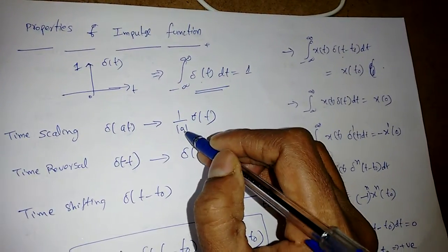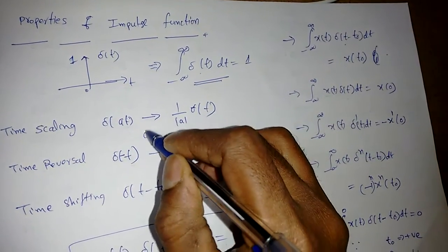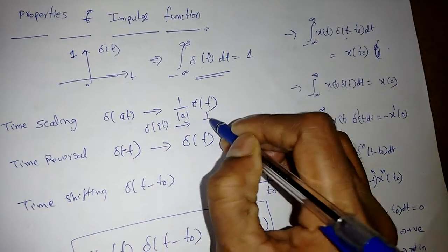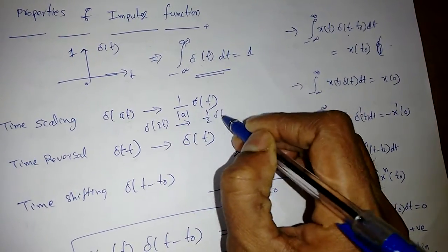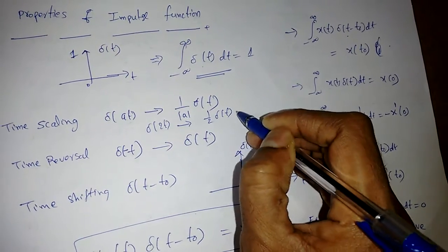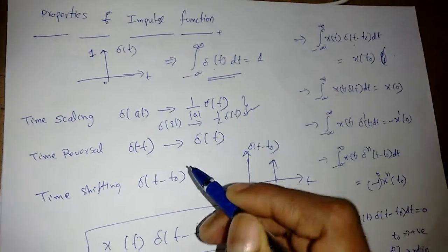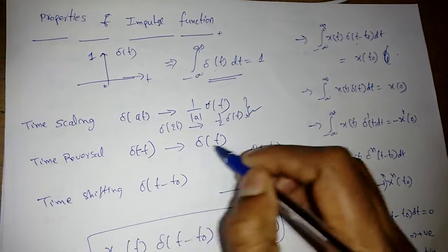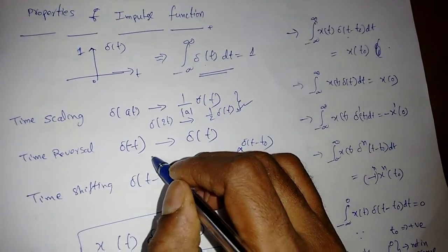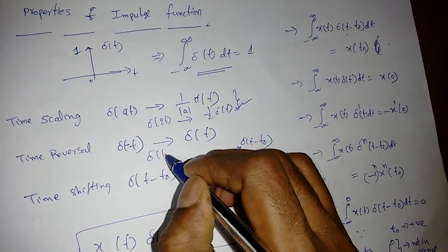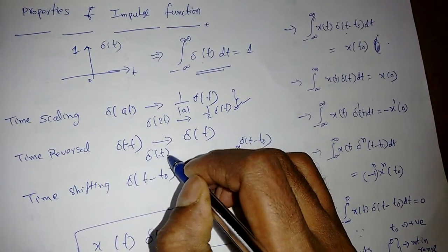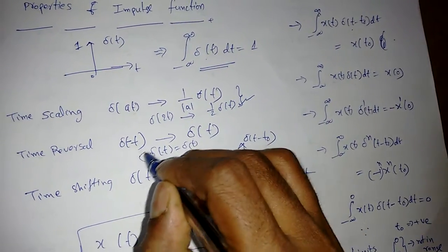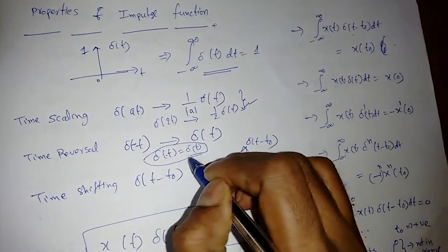For example, delta(2t) will become (1/2)·delta(t). That is one property of the delta function. If there is a time reversal, delta(-t) will become delta(t) only — so it is like an even signal.